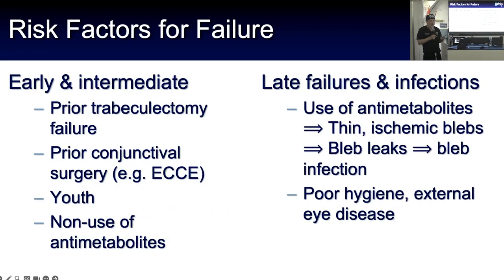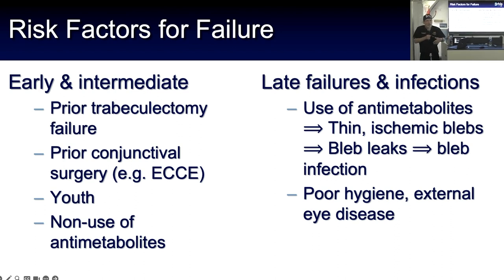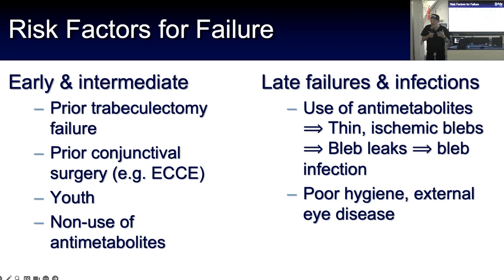Risk factors for trabeculectomy failure include a history of a prior failed trabeculectomy and prior conjunctival surgery. If you've done an extracapsular surgery or taken down the conjunctiva for manual small-incision cataract surgery, you've already prompted the wound healing and scarring response — the eye is primed to heal quickly. Younger patients are at higher risk of failure, as is failing to use wound healing modification such as mitomycin or 5-fluorouracil. Anti-fibrotic agents are a double-edged sword: late failures sometimes happen because too much anti-metabolite was used, causing a thin bleb that allows infections or leaks to develop sometimes years later.